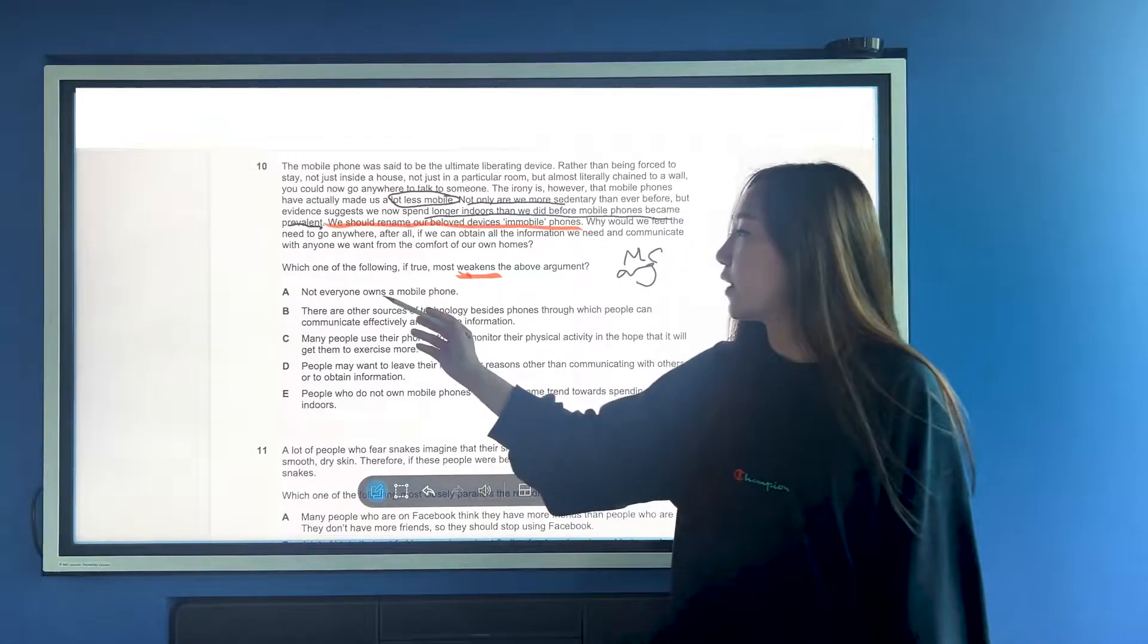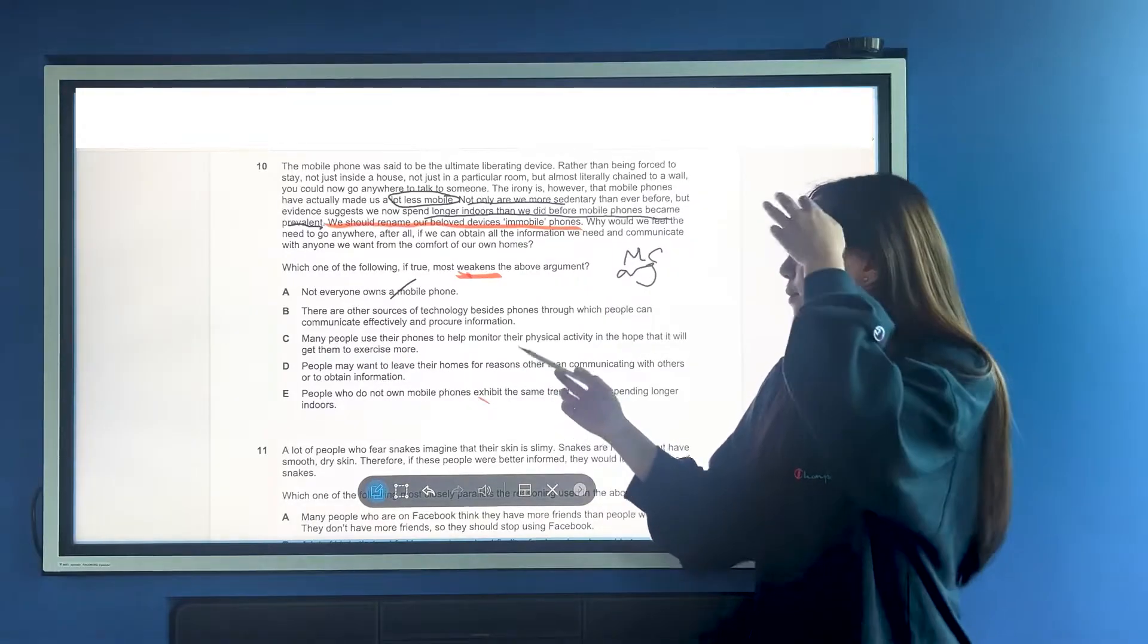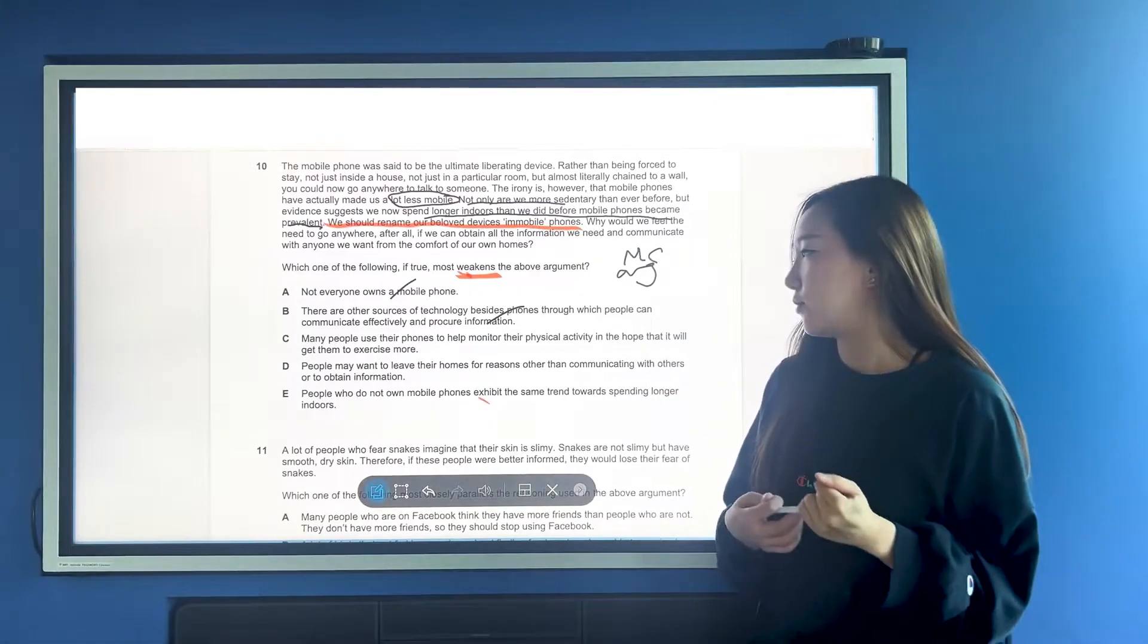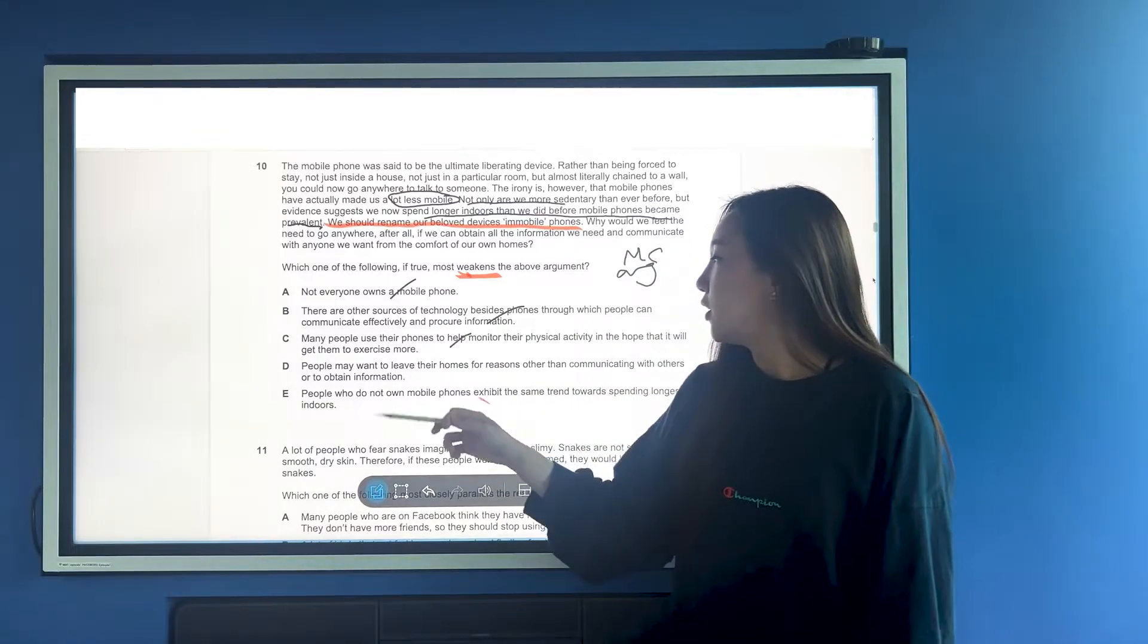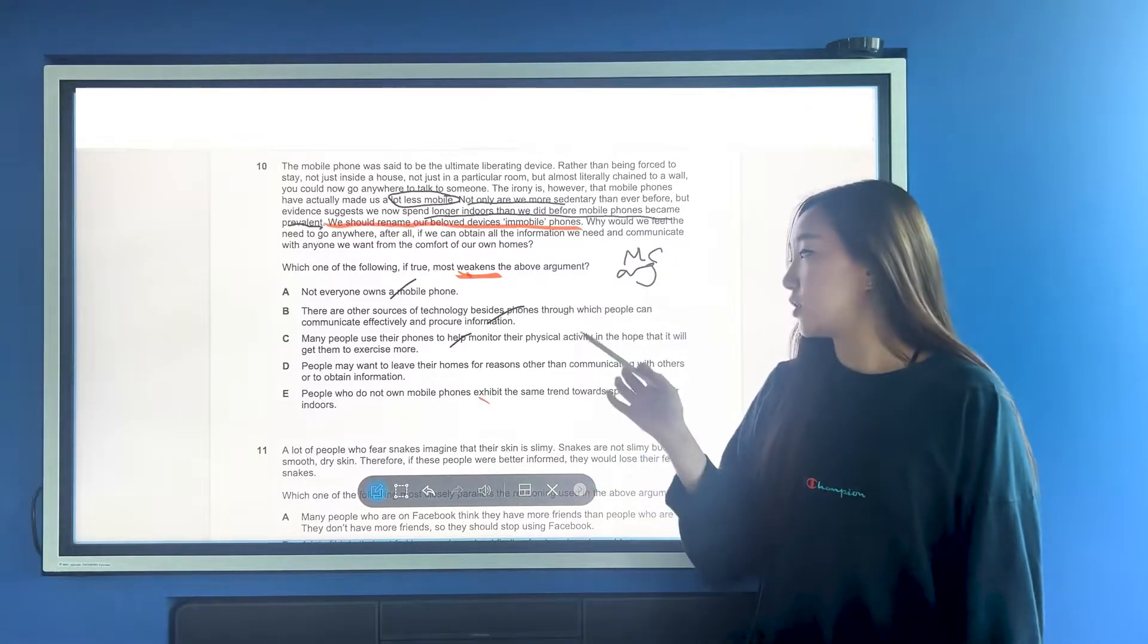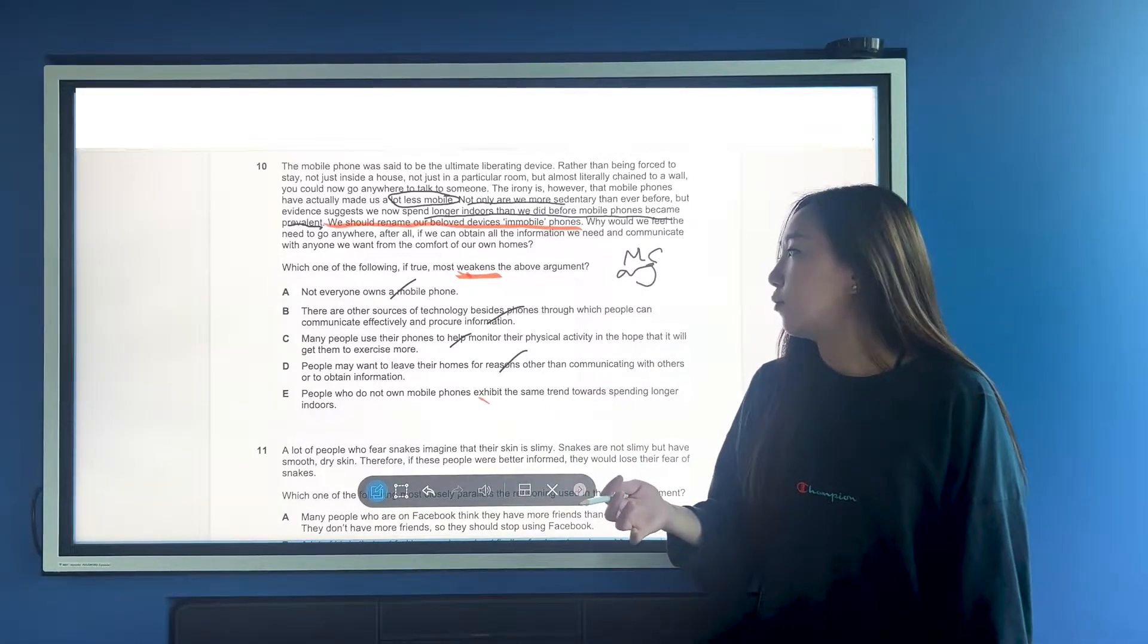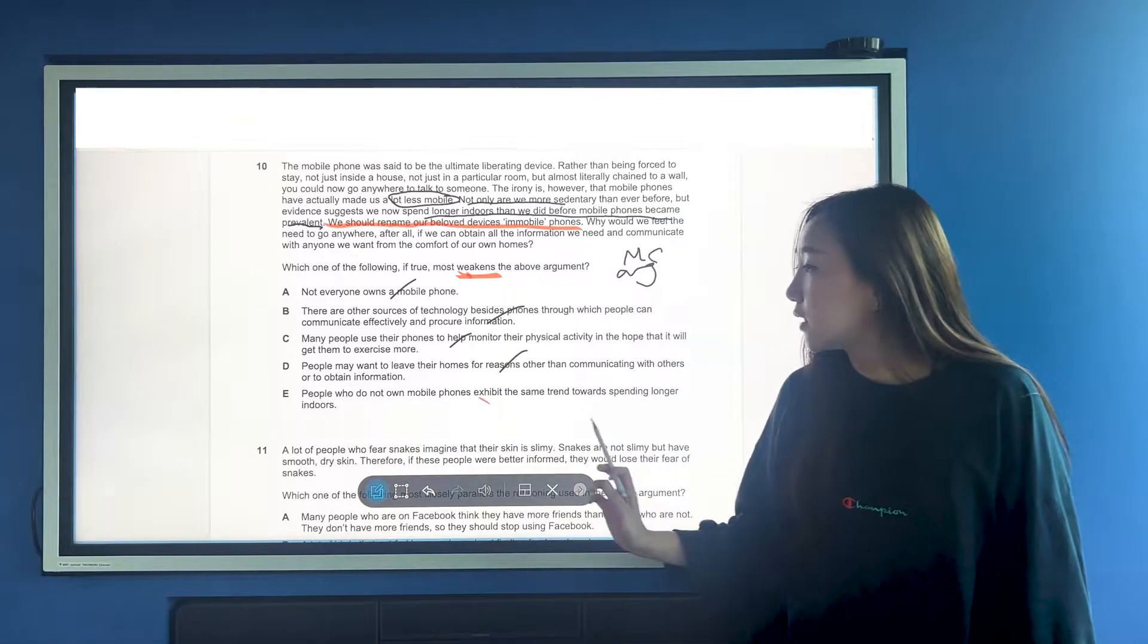A, not everyone owns a mobile phone - doesn't really matter. B, there are other sources of technicised phones through which people can communicate effectively - again, pointless information. C, when people use their phones to help monitor their physical activity - that's not the point because the argument we're making is that mobile phones are making us more sedentary, so it's unrelated. D, people may want to leave their homes for reasons - again, that's not related to the argument we're trying to weaken.